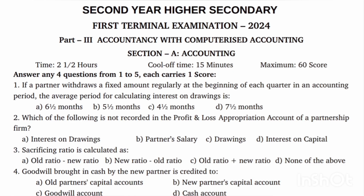First question: If a partner withdraws a fixed amount regularly at the beginning of each quarter in the accounting period, the average period for calculating interest on drawings is 7 and a half months — that is, 7 by 2 means half a year of the month. Option D is the answer.